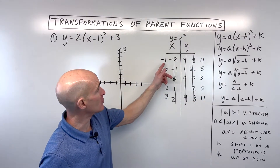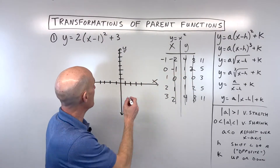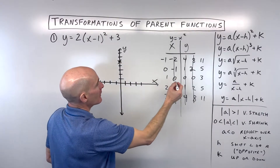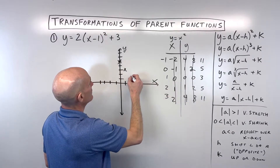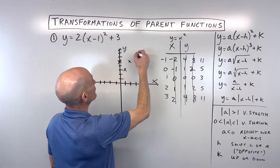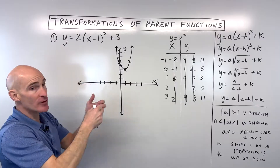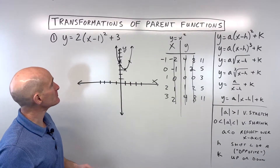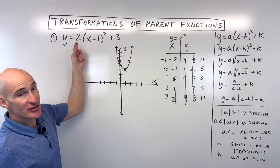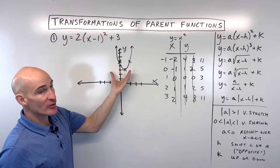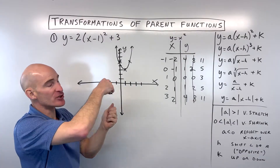Plotting the transformed points: (0, 5) is visible on the graph, (1, 3), (2, 5), and (3, 11) goes slightly off. You can see the parabola — it's a bit narrower because we stretched it vertically by a factor of 2, shifted right 1, and up 3. If the A were negative 2, the parabola would open downward; with positive 2, it still opens up.